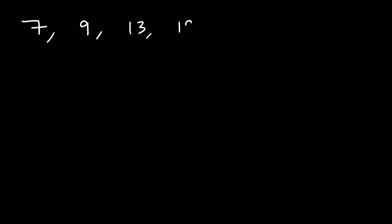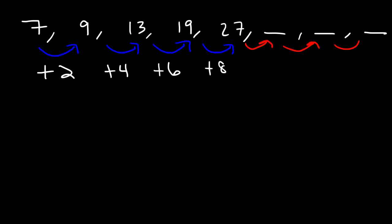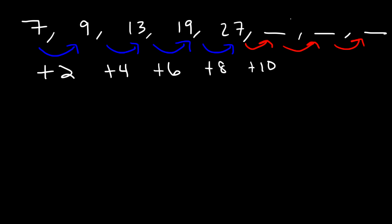Here's another example: 7, 9, 13, 19, 27. Using those five numbers, find the next three numbers. The difference between 7 and 9 is 2. 13 minus 9 is 4. 19 minus 13 is 6. And 27 minus 19 is 8. So the sequence of differences increases by 2. Next time we're going to add 10. 27 plus 10 is 37. Then we need to add 12. 37 plus 12 is 49. And then we'll add 14. 49 plus 14 is 63.